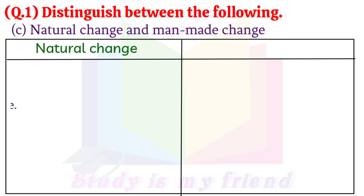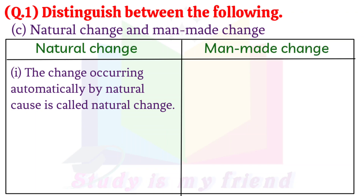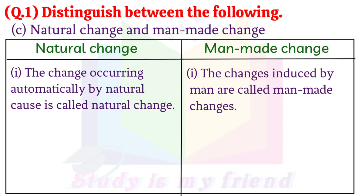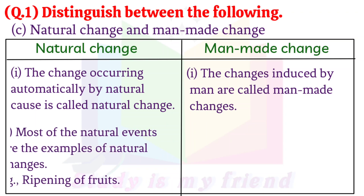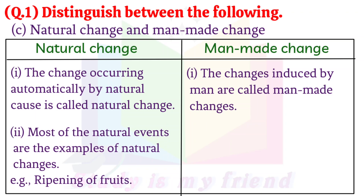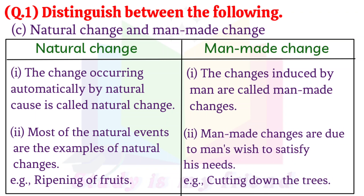C. Natural Change and Man-made Change. Natural Change 1: The change occurring automatically by natural causes is called natural change. Man-made Change 1: The changes induced by man are called man-made changes. Natural Change 2: Most natural events are examples of natural changes. For example: ripening of fruits. Man-made Change 2: Man-made changes are due to man's wish to satisfy his needs. For example: cutting down the trees.